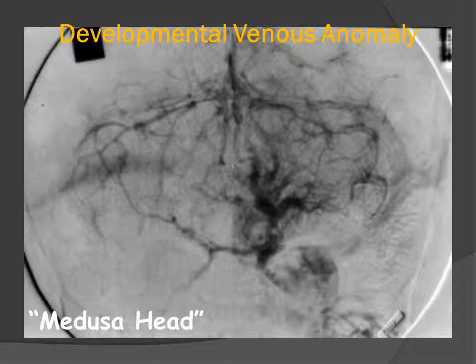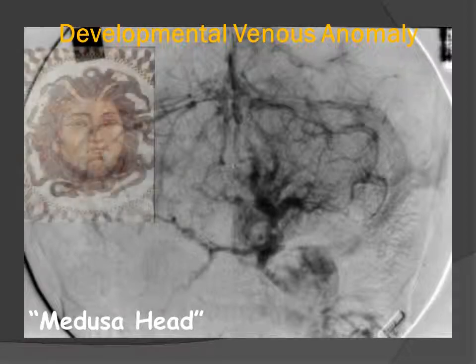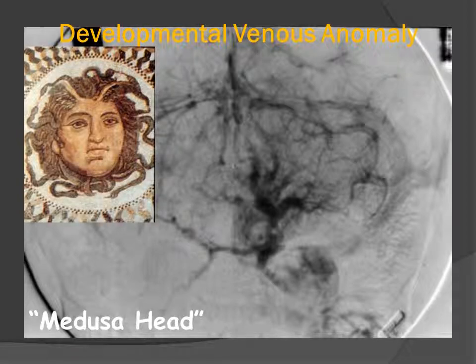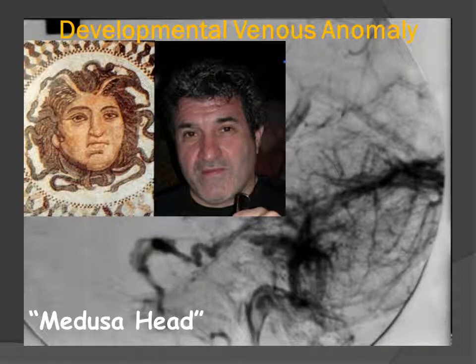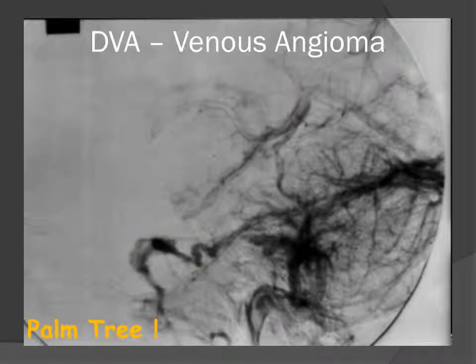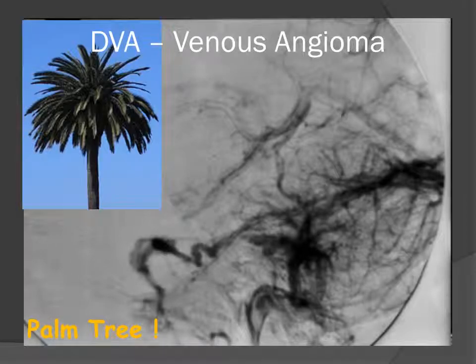Here is another posterior fossa developmental venous anomaly seen on the venous phase from a vertebral injection. Again, we have the appearance of multiple collector veins draining into a dominant transcortical vein. But to my eye, this does not look like the medusa head as seen in this ancient Greek mosaic — in fact, it looks much more like my brother Peter the young Greek. In my mind, the developmental venous anomaly, or venous angioma, actually looks like a palm tree. The collector veins look like the fronds of the palm tree, and the trunk of the DVA looks like the trunk of the palm tree.